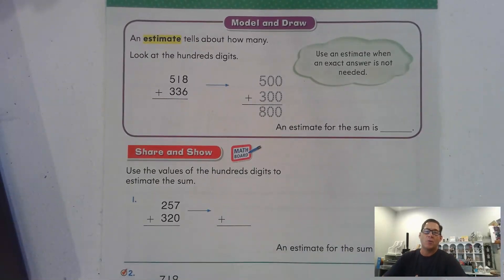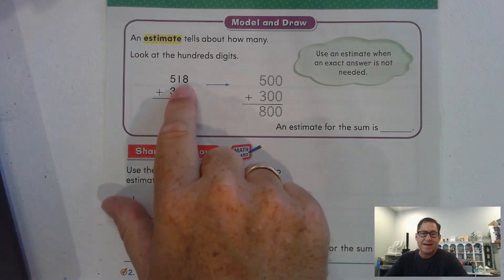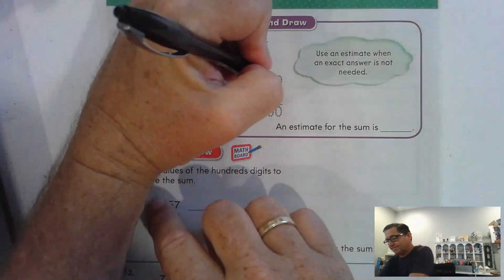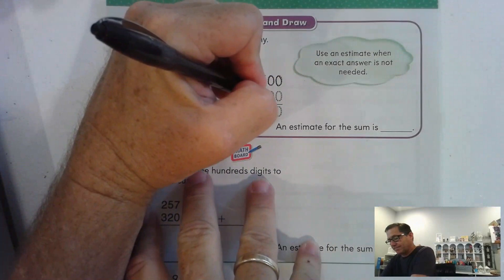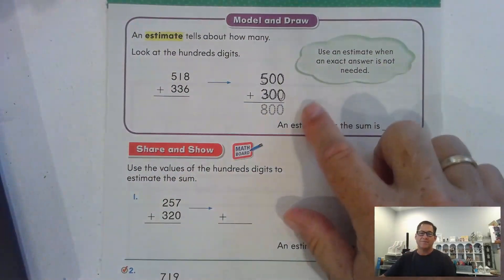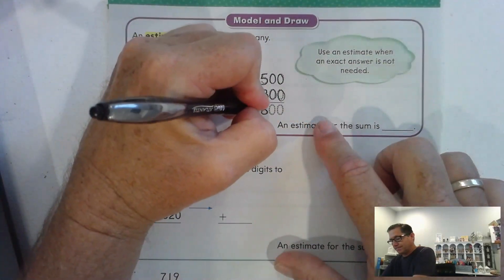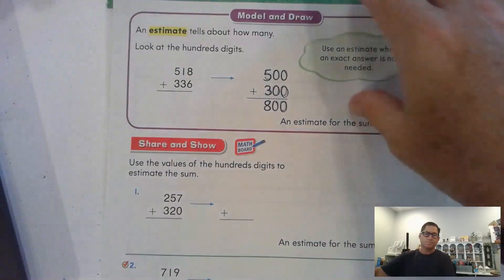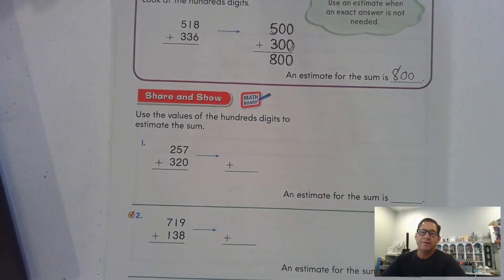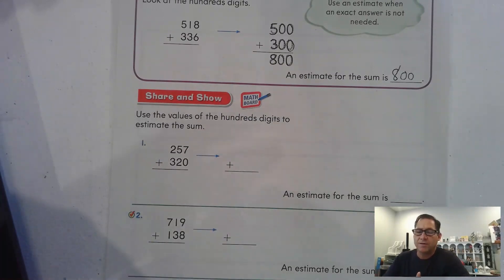So, an estimate tells about how many. So, look at the hundreds digits. 518. So, there's 500, right? 336. 300. So, a reasonable estimate for this problem is 800. Use the values of the hundreds digit to estimate the sum. We're not worrying about what is known as the concept of rounding up or down. All we're doing for this lesson is just looking at the hundreds.